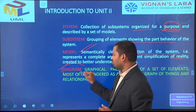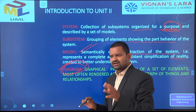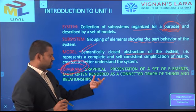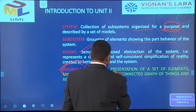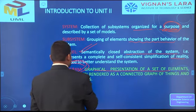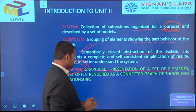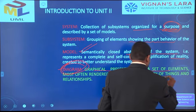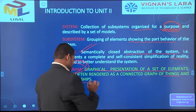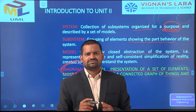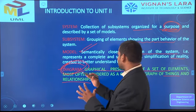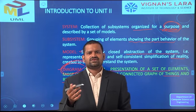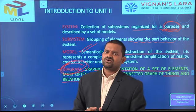What is a diagram? A diagram is a graphical representation of a set of elements, most often rendered as a connected graph. In a diagram, we observe things and relationships. A diagram is a graphical representation of elements — the things and relationships combined together form the diagram.